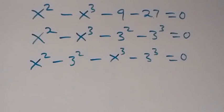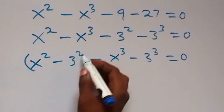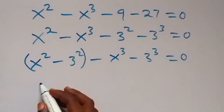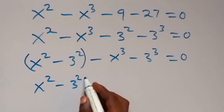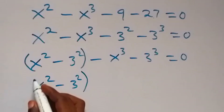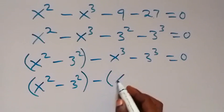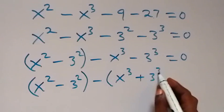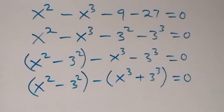Then in the next step, let's put this in brackets. We have these two in brackets, then we factor minus out from here. So we have (x squared minus 3 squared) then minus, and out here we have (x cubed plus 3 cubed) equals 0.